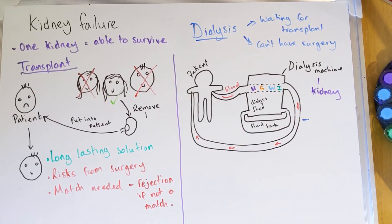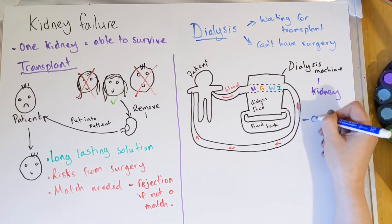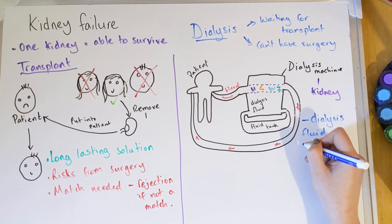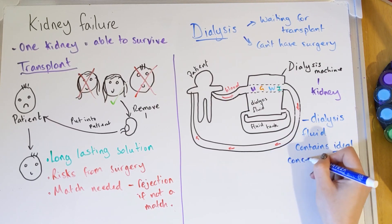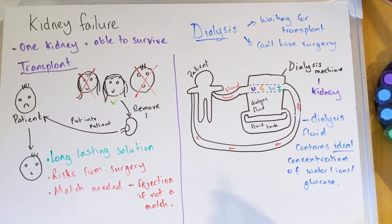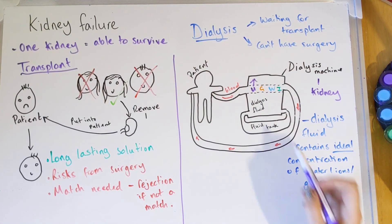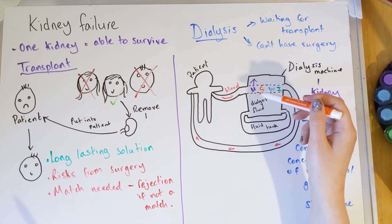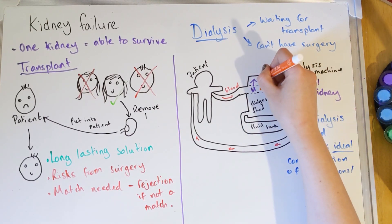The fluid inside the dialysis machine is very special — it's a mixture of glucose, water, and ions at the ideal concentration to mimic blood. The concentration of that fluid never changes. The dialysis fluid contains no urea at all because urea is a waste product, so when blood passes through the machine all of that urea diffuses into the fluid and is removed. The glucose, water, and ions will move in or out depending on the conditions of the person's body.